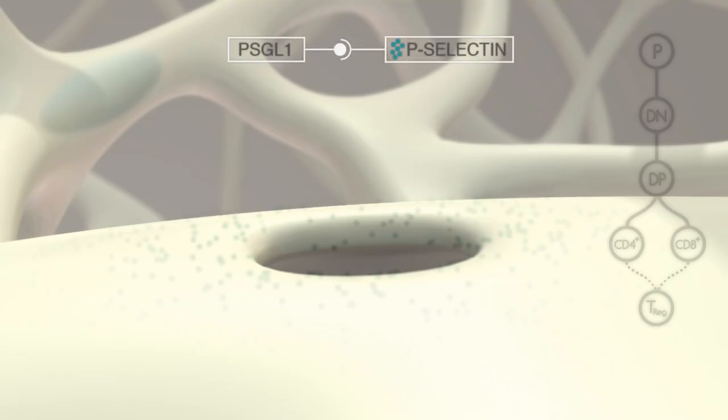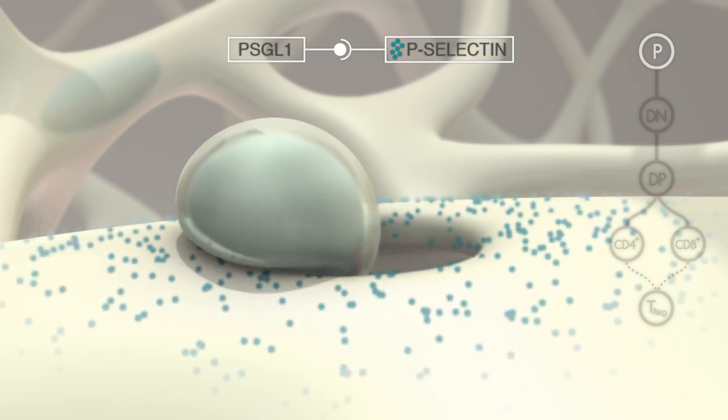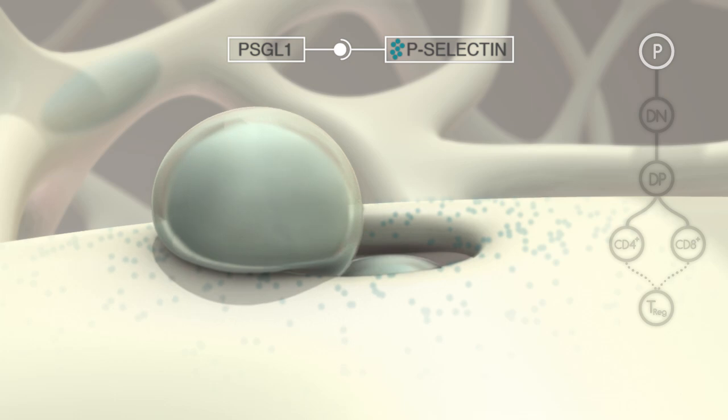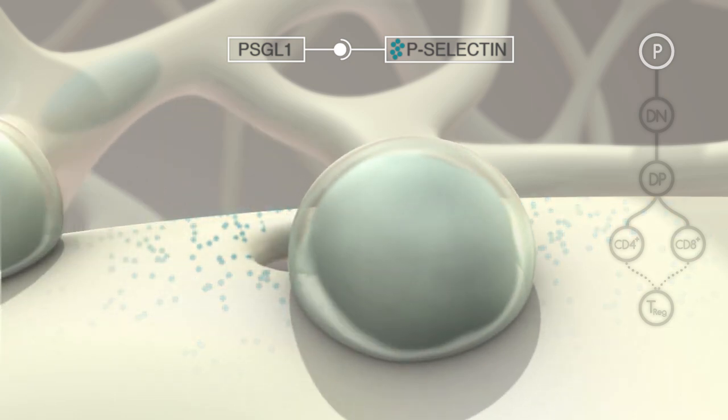Their entry is regulated by adhesive interactions between platelet selectin glycoprotein ligand 1, PSGL1, expressed by the progenitor cells, and p-selectin, expressed by thymic epithelium.